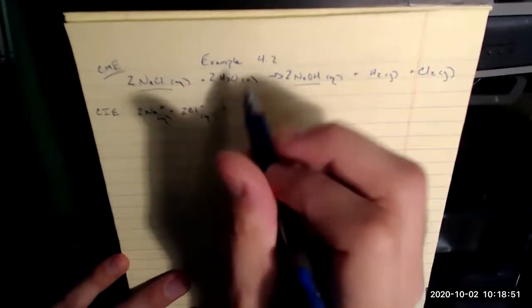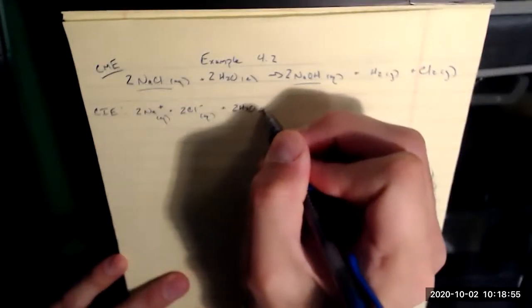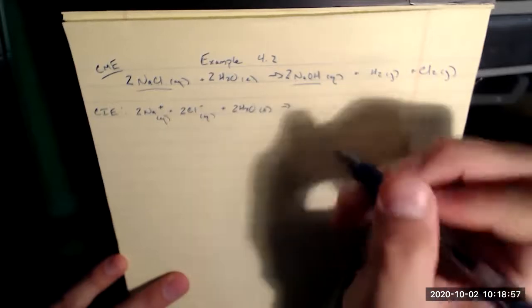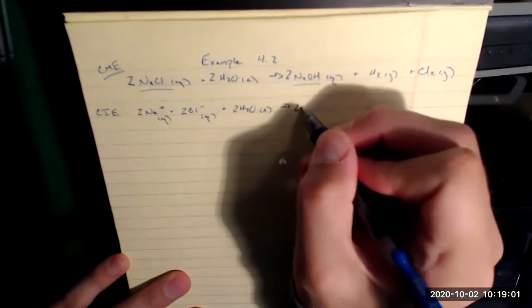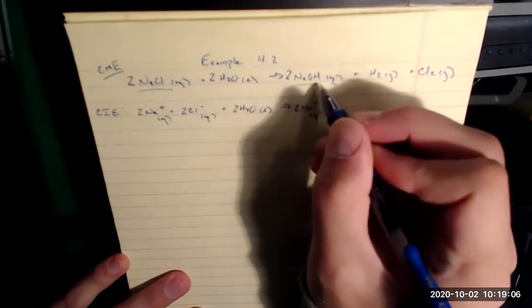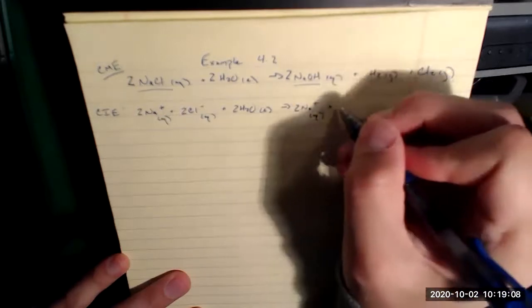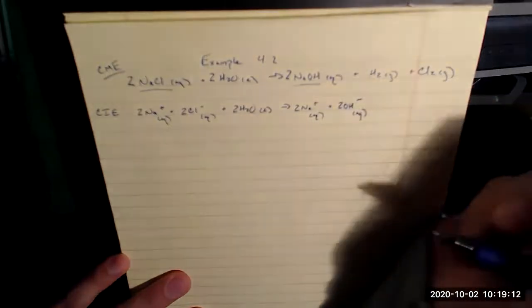Anything that's not ionic or aqueous stays together. So H2O is a liquid that's going to stay as it is, but NaOH is ionic and aqueous. So it splits up into two Na plus, which is aqueous, and it doesn't split up into OH. Remember that OH minus is a polyatomic ion, so that stays together.